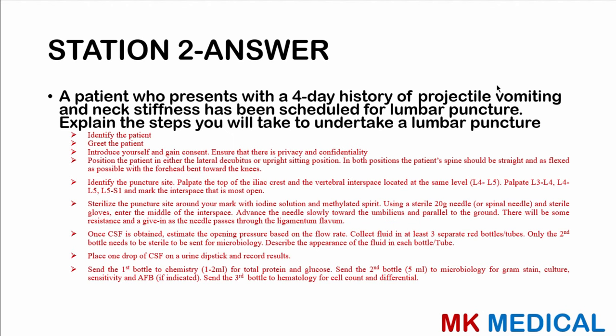Position the patient in either a left lateral decubitus position or seated upright — similar to how spinal anesthesia is given during a caesarean section. In both positions, ensure the spine is straight and as flexed as possible. Tell the person to bend their forehead towards their knees, place their chin on their chest, and tuck their shoulders in.